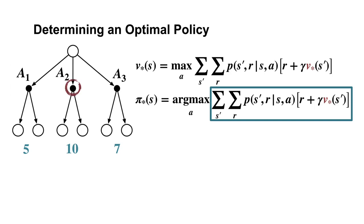Of these three actions, A2 maximizes the boxed term with a value of 10. This means that A2 is the optimal action. In fact, there could be more than one maximizing action if multiple actions are tied. If there are multiple maximizing actions, we could define a stochastic optimal policy that chooses between each of them with some probability.